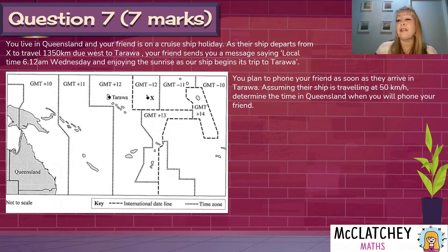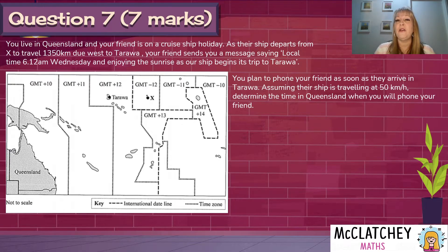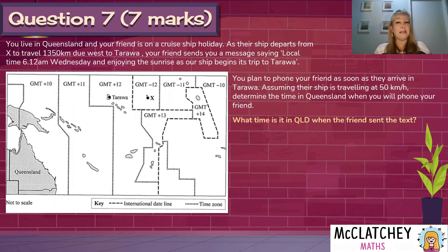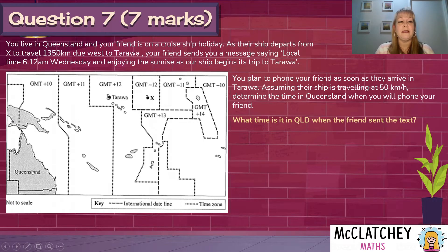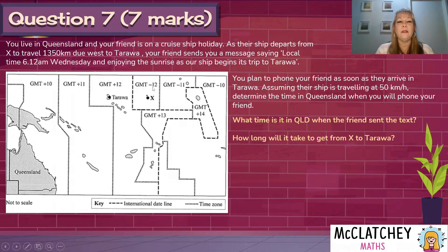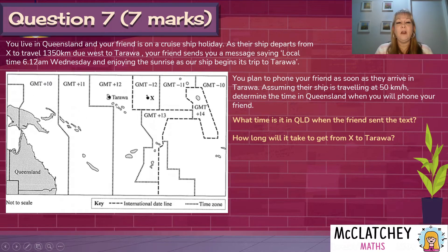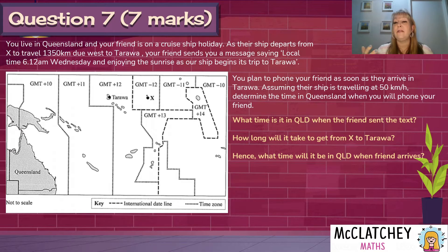We need to phone our friend as soon as they arrive in Tarawa. Assuming the ship is travelling at 50 kilometres an hour, we need to determine the time in Queensland when we make that call. So there are three questions leading us to the solution: first, what time is it in Queensland when the friend sent the text? Second, how long will it take to travel between X and Tarawa — they are 1,350 kilometres apart, roughly more than Sydney to Brisbane. Third, what time will it be in Queensland when the friend arrives in Tarawa, so we can make that call?